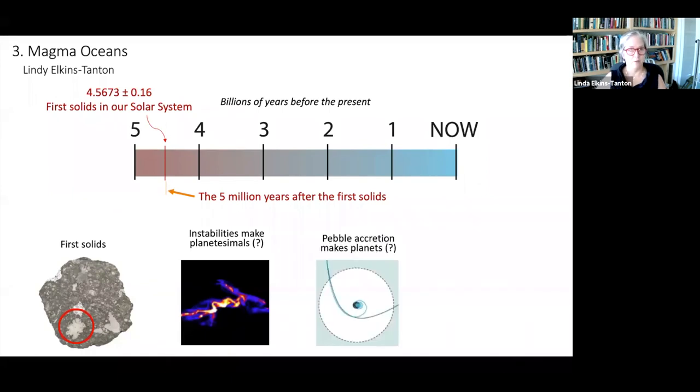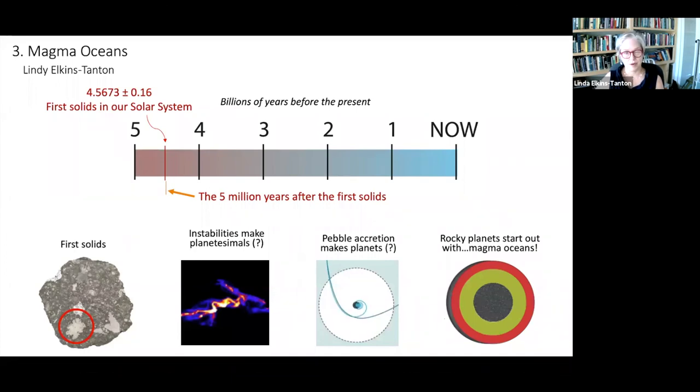And we talked about how pebble accretion is the latest hypothesis, a very workable one for how smaller things like pebbles up to, say, house size get slowed down by the gas and pulled in by the gravity of those planetesimals such that planets can be built very fast. And then we talked about how those last really big accretionary impacts create magma oceans. And so today, this is where we're going to start with magma oceans.